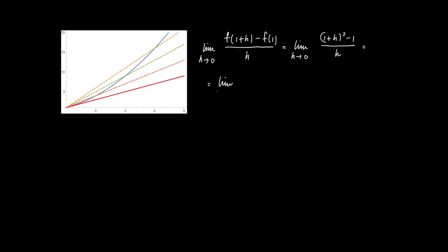we just get rid of the brackets, so that we get 1 + 2h + h² - 1 in the numerator, and we divide it by h.